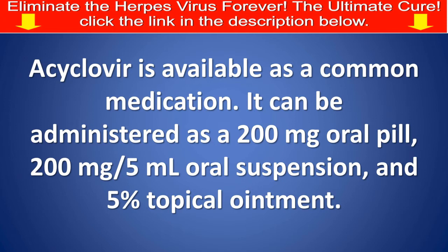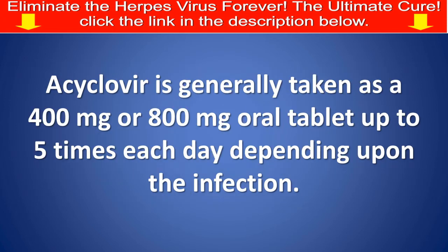It can be administered as a 200mg oral pill, a 200mg/5ml oral suspension, and a 5% topical ointment. Acyclovir is generally taken as a 400mg or 800mg oral tablet up to 5 times each day, depending upon the infection.